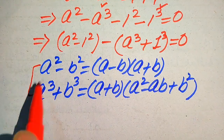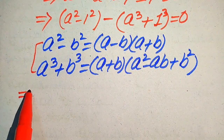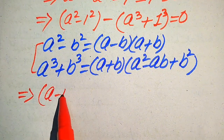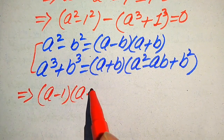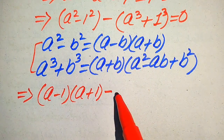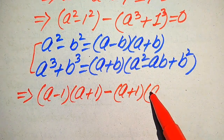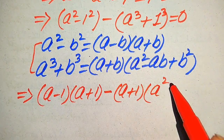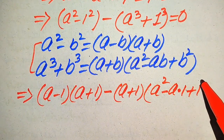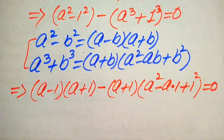Applying the difference of squares formula to the first factor gives (a minus 1)(a plus 1). Applying the sum of cubes formula to the second factor gives (a plus 1)(a squared minus a times one plus one squared). The whole expression equals zero.